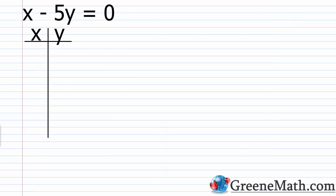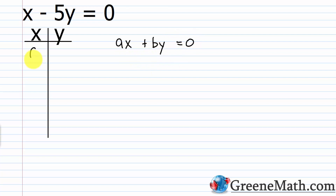Let's take a look at x minus 5y equals 0. This is an example of a line that passes through the origin. You can't just use the x and y intercepts because both occur at (0, 0). If I plugged in 0 for x, I'd have negative 5y equals 0, and y must be 0. So when you see ax plus by equals 0, you know one point on the line is the origin.